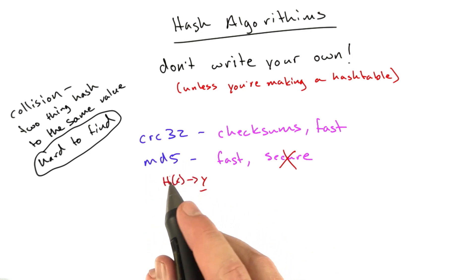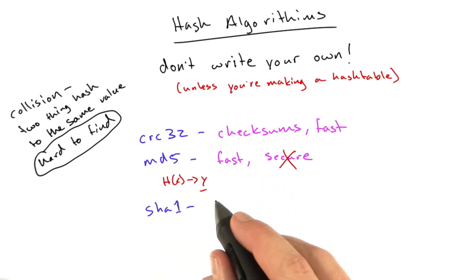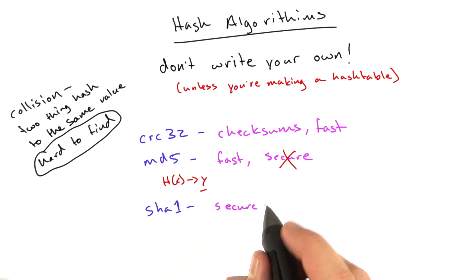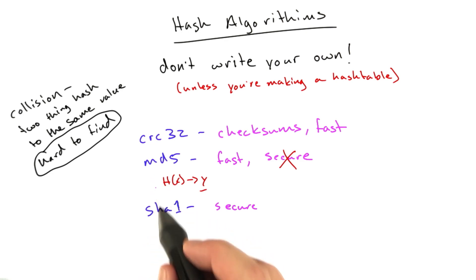The second most popular hash is called SHA-1. This is not as fast, but it's fairly secure. Just now are we starting to kind of hear demonstrations of people finding collisions in SHA-1. It's still pretty good. It's actually the second most widely used hash behind MD5.